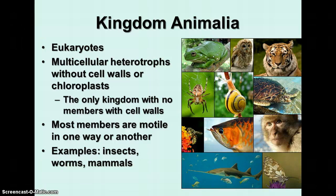The final kingdom is kingdom Animalia. Kingdom Animalia are all eukaryotes, defined as multicellular heterotrophs without cell walls or chloroplasts. They are the only kingdom with no members with cell walls — every other kingdom has at least some members with cell walls. Most members of kingdom Animalia are motile in one way or another. Examples include insects, worms, mammals, fish, birds, and so forth.